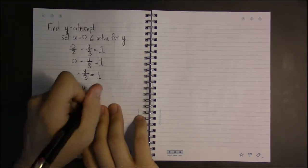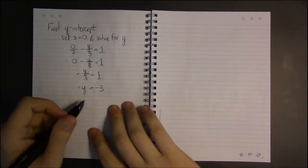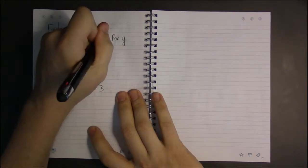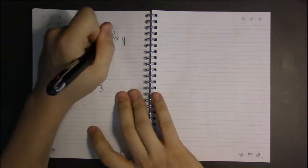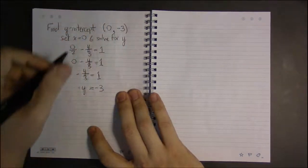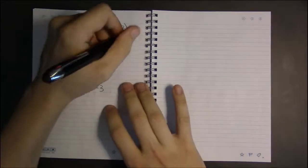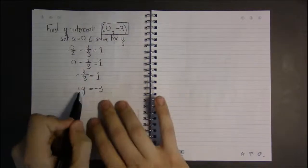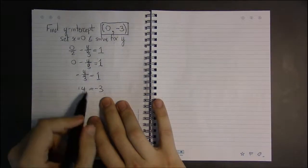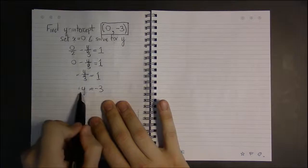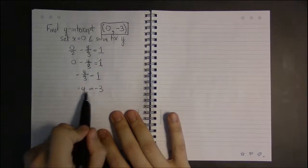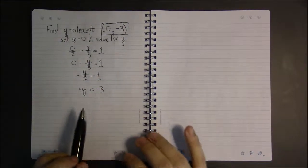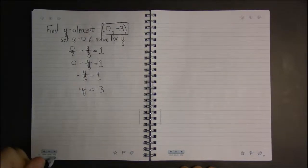So our y-intercept is the point where x equals 0, that means that y will be -3. So this is our answer. Or sometimes we'll say that the y-intercept is simply y = -3, and we'll understand that if this is a y-intercept, that this is actually a point where the x-coordinate is 0 and the y-coordinate is -3.